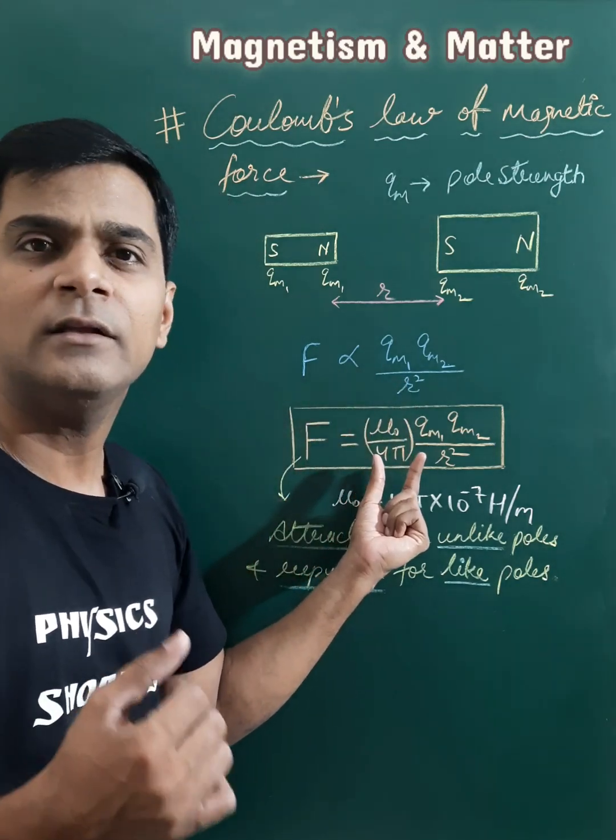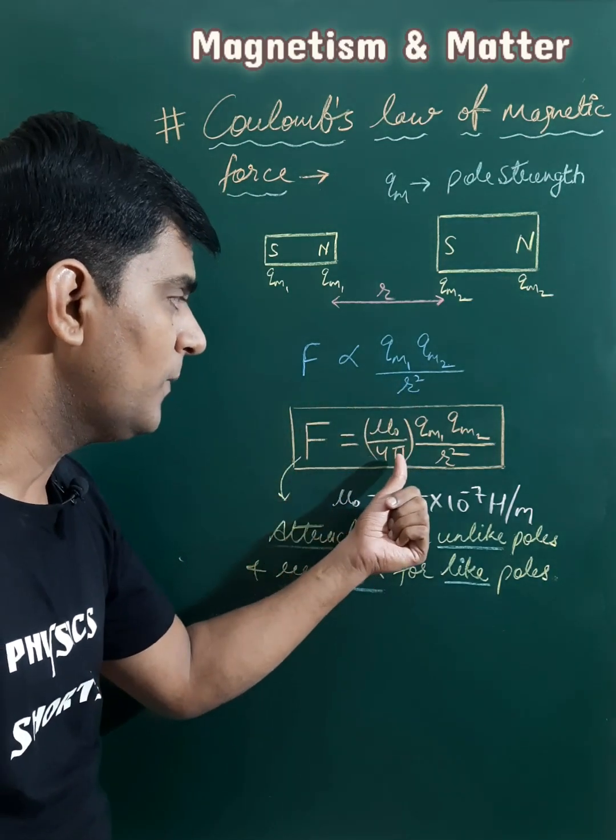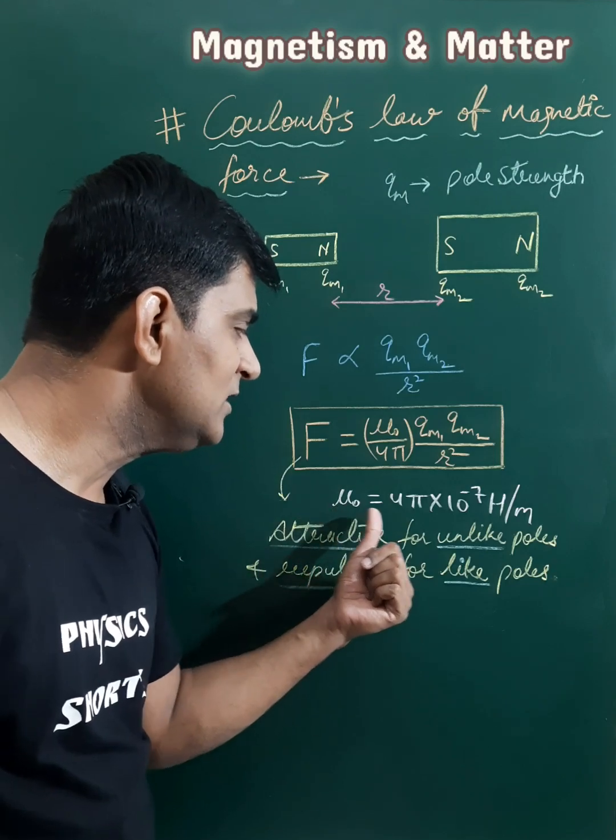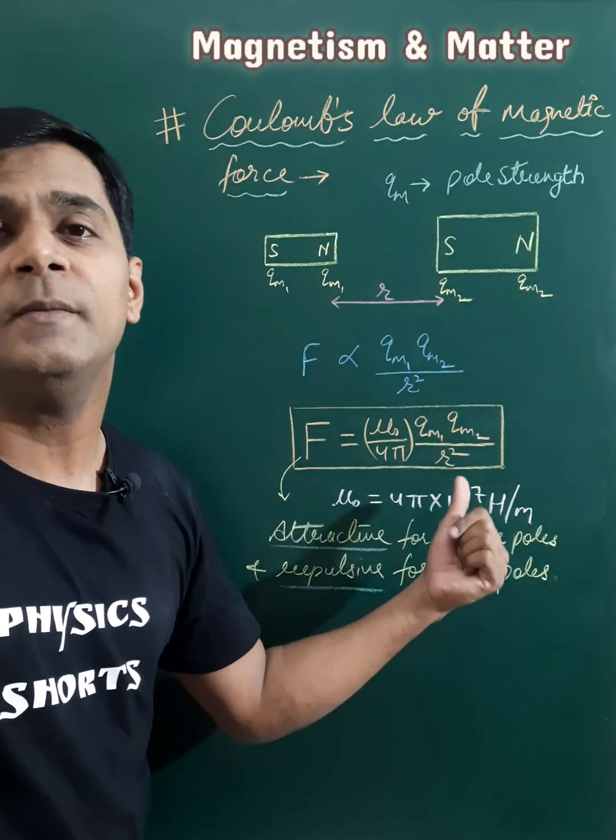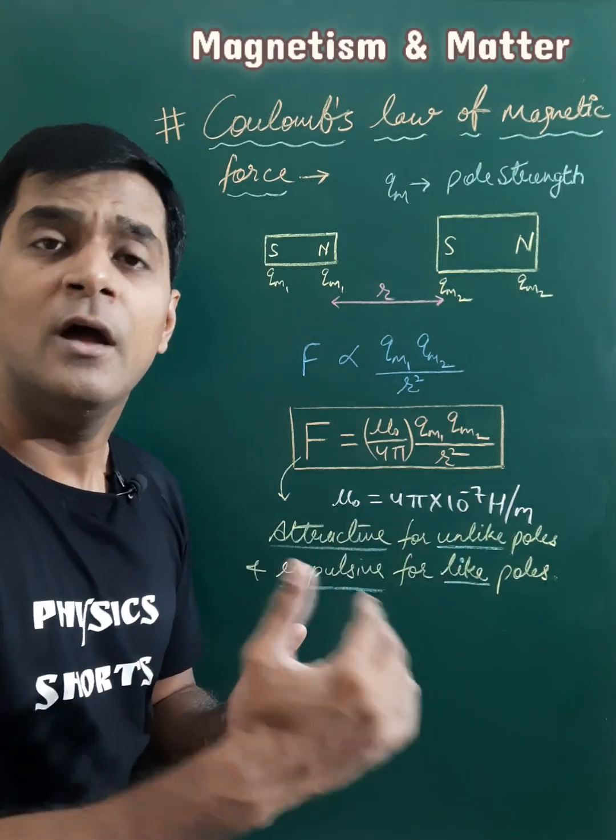When we remove this proportionality sign, then the constant that appears will be μ₀/(4π). μ₀ is permeability of the free space and its value is 4π × 10⁻⁷ henry per meter or tesla meter per ampere.